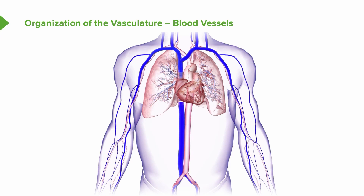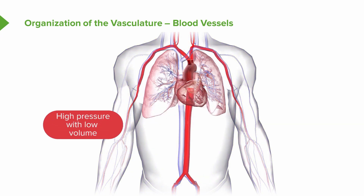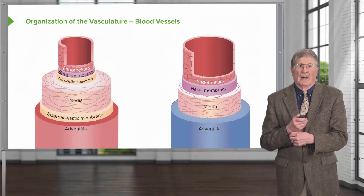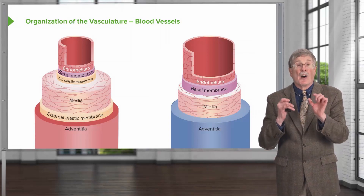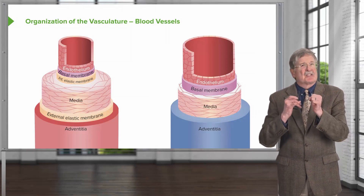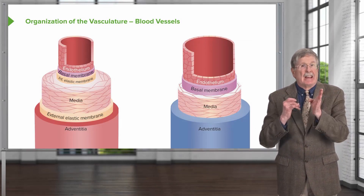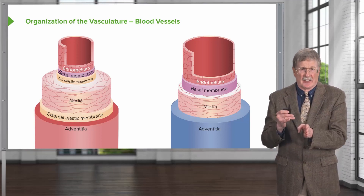On the other hand, the arterial system is high pressure. It has to transmit blood to the entire body at a pressure sufficient to move it through tiny capillaries. So it's a high pressure system, but low volume. When we're talking about the high pressure system, the arterial side, it's got a certain organization. We're also going to talk about the venous side, and it has a certain organization.